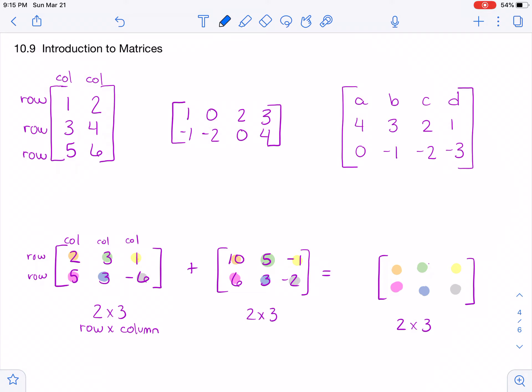So with matrices, you have rows and you have columns. The rows go across, so this one has three rows, and the columns go up and down, so it has two columns. And you always write their sizes with the amount of rows first and then columns.